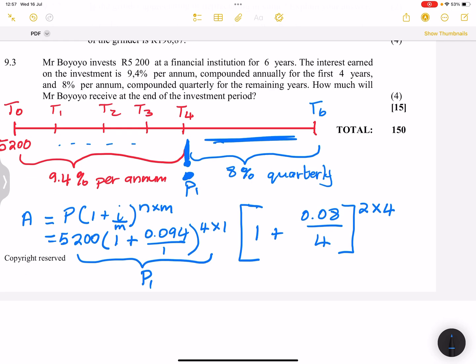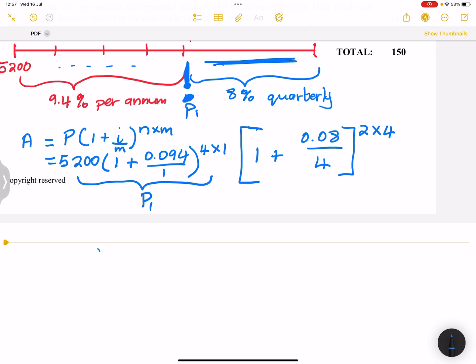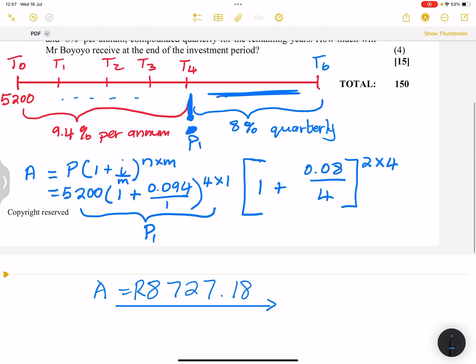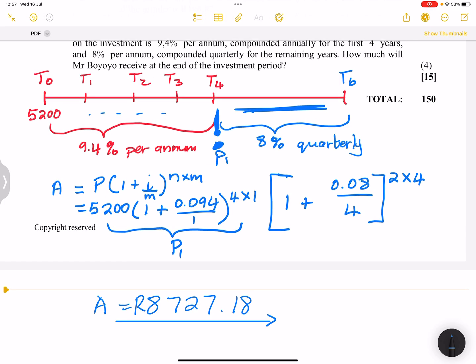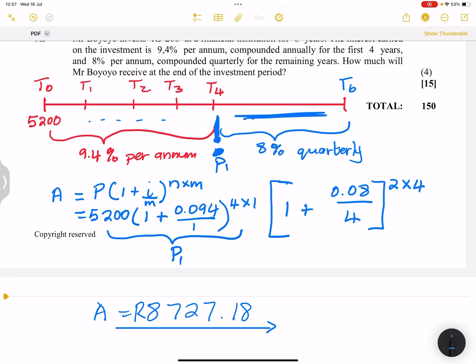So the accumulated value, ladies and gents, would be 8,727.18. And that is how the cookie crumbles. And please, ladies and gents, have a look at the videos that I've curated where I teach you how to actually use timelines. Very important for us to do so. But that brings us to the end of this question paper. It's really been a pleasure. I hope that you've watched all the questions. I'll see you guys again with Paper 2. I'll see you next time. Shop shop.